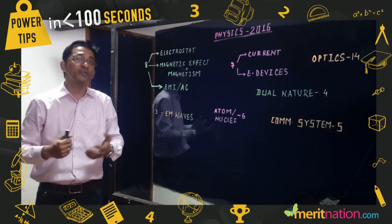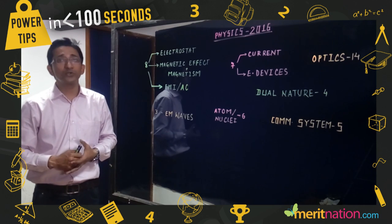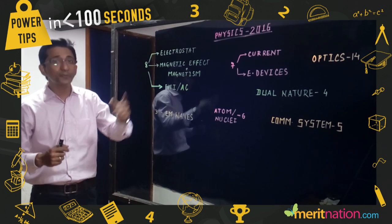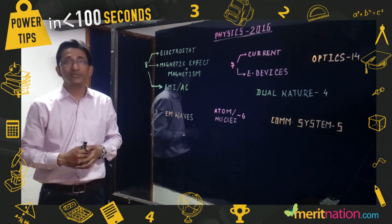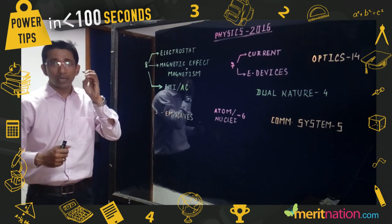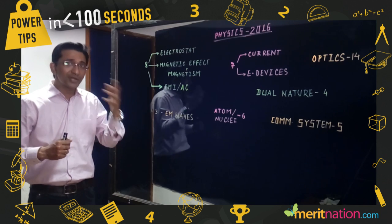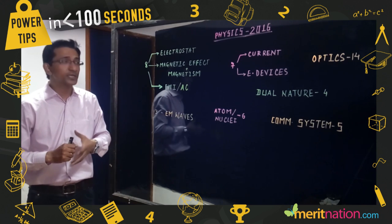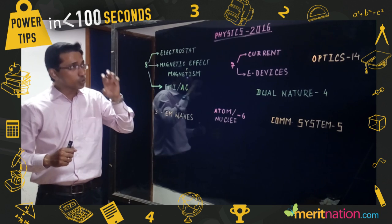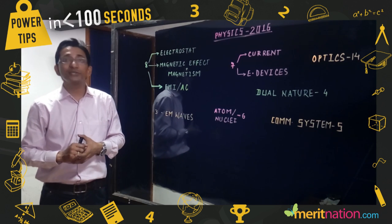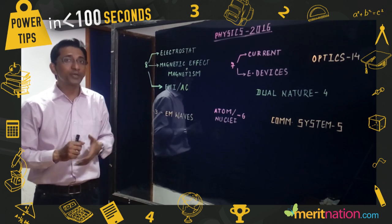Optics has a weightage of 14 marks. Here you have to be clear about Brewster's law, polarization, wave theory, and numericals based on geometrical optics. You should also be clear about different optical instruments and problems based on optical instruments.